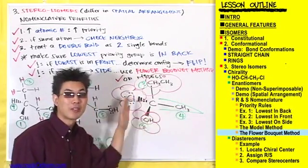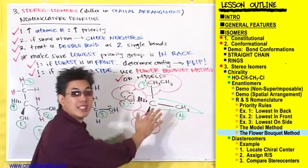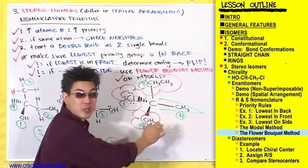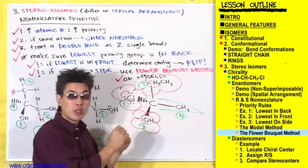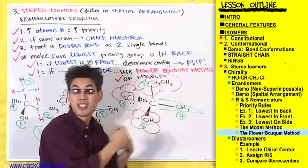Let's take this last compound for example. This compound was the S enantiomer. Let's draw out the R enantiomer now just for kicks.